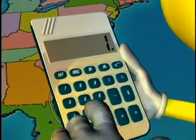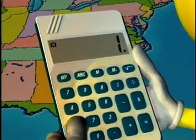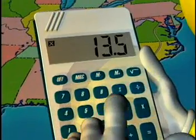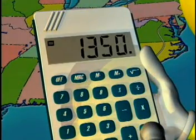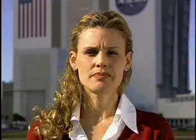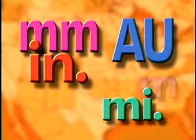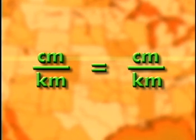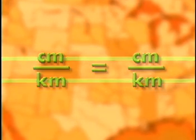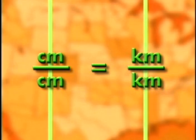Using multiplication, Norbert calculated the actual distance between Kennedy Space Center and Washington, D.C. to be about 1,350 kilometers. Here is an important point to remember: proportions often include different units of measurement. Units must be the same across the top and bottom, or down the left and right sides. If the units only match diagonally, then the ratios do not form a proportion.